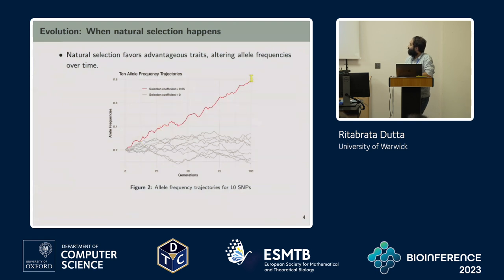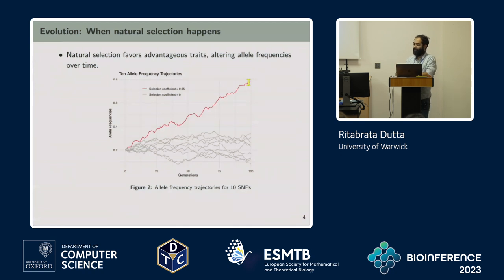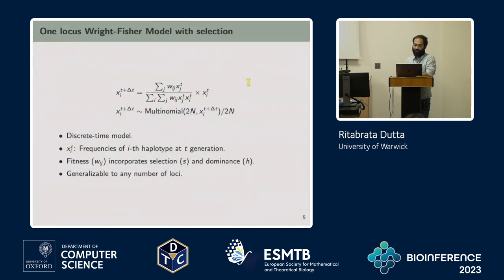Then you see they kind of go up. And all of the others, which have not been selected, they stay kind of neutral around where they started in frequency. Note that this frequency has to sum up to between 0 and 1. So they are restricted between 0 and 1. That's why the whole Wright-Fisher model is restricted, and then the diffusion and all these things get into trouble.